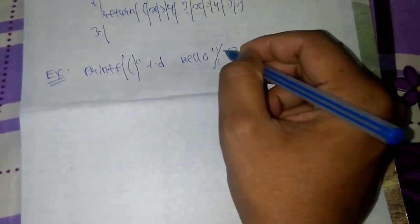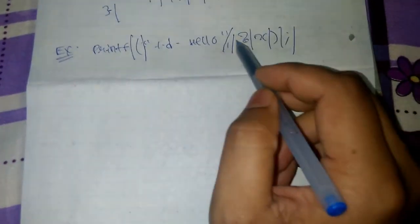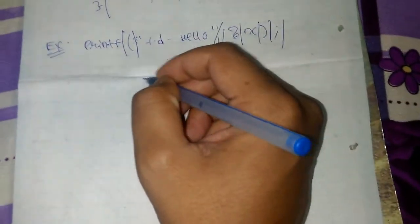So this will be considered a single token, then this, this, this, this, and this. So the number of tokens is 1, 2, 3, 4, 5, 6, 7, 8. Here the number of tokens is eight.